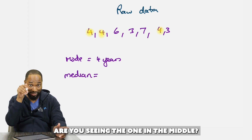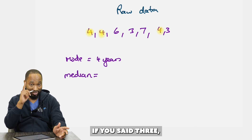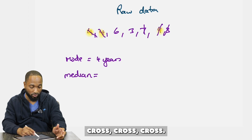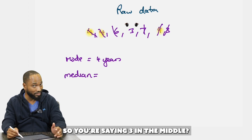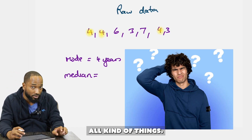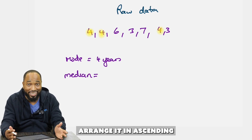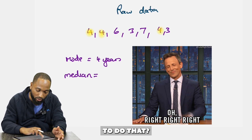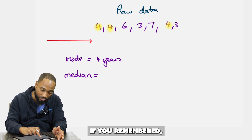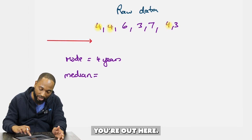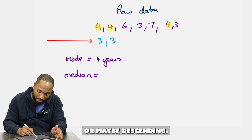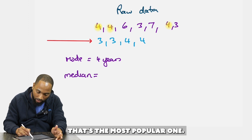Now, what's the median? If you said three, you are wrong. You need to arrange the data in ascending order first — don't forget to do that! Ascending order is the most popular choice.